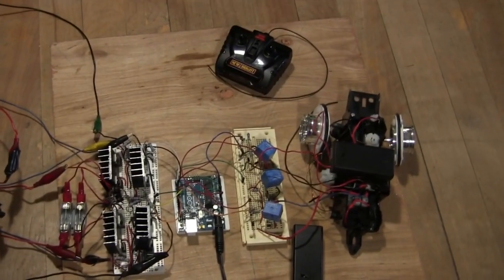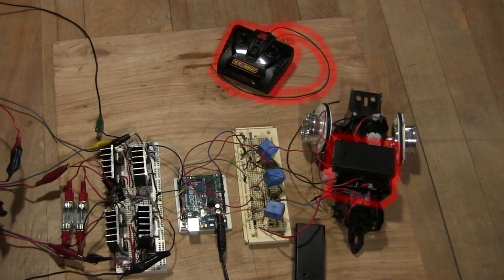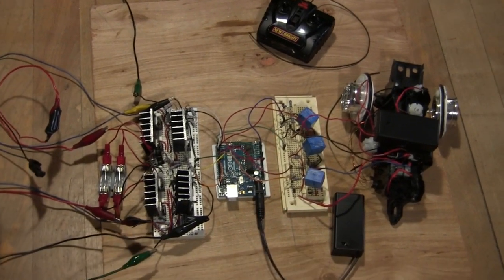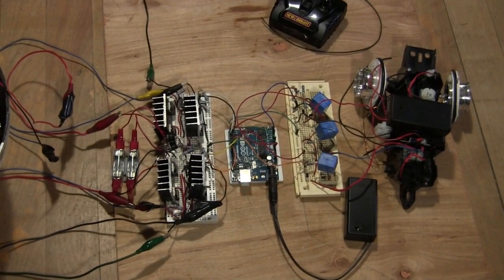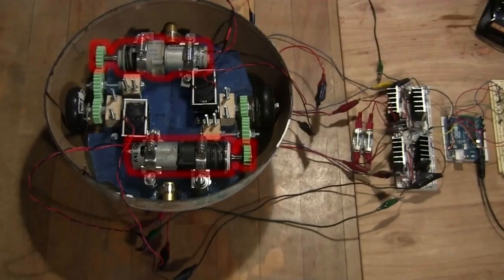I'm using the same remote control transmitter and toy truck receiver as in version 1, but this time I take the output of that truck and run it through this circuit I came up with and into an Arduino. The Arduino uses that information to drive these two H-bridge circuits, which then drive these two drill motors.